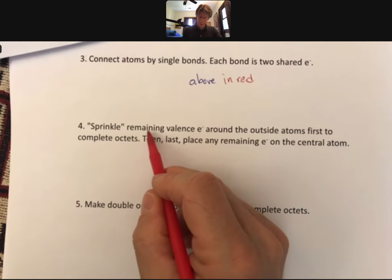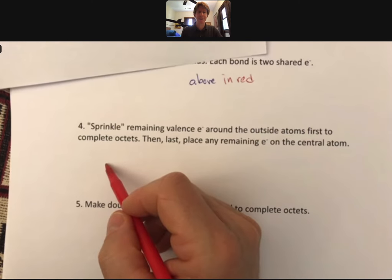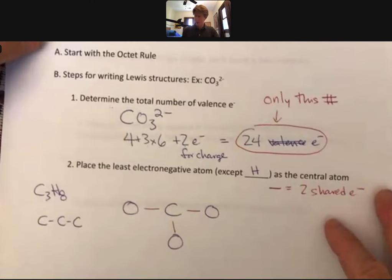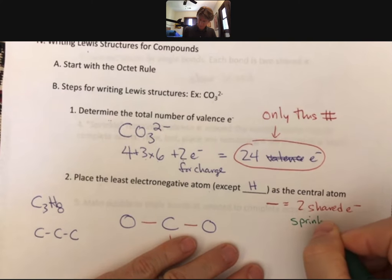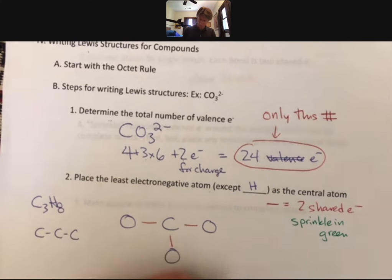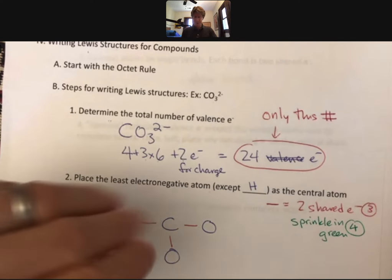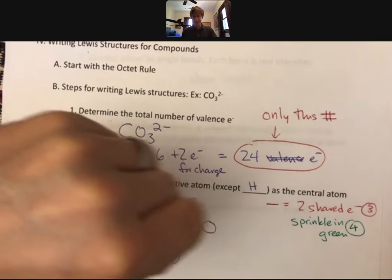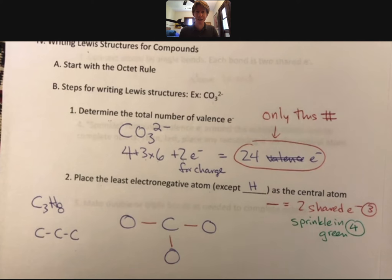Alright. And then sprinkle the remaining valence electrons around the outside atoms first to complete octets. So here we are. I'm going to do that in green. So sprinkle in green. And so I guess I should number these. So this is step three. And this is step four. And what I mean by that is I'm going to sprinkle the electrons around. These electrons do not belong to any of the atoms anymore, at least in the way I do it. They just belong to the Lewis structure. And I think that's a good way of looking at it too. That's why I do it.